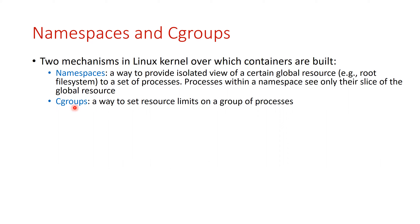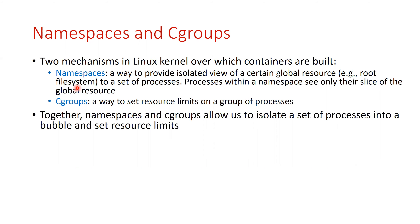The second mechanism is called cgroups. Cgroups is a way where you can set resource limits. For example, you can say these set of processes cannot take more than 50% of the CPU. Using these two mechanisms, you can isolate processes, provide them a sliced view of a global resource, and set limits on that resource. So using these two mechanisms, you can implement lightweight isolation and virtualization, which is usually referred to as containers.